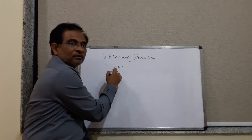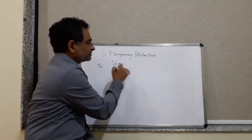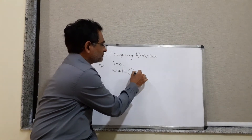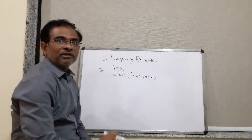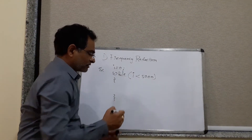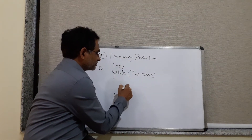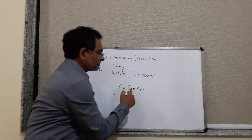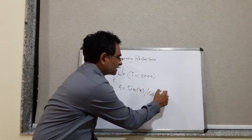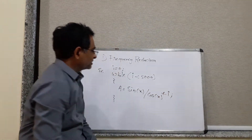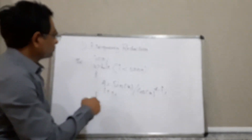Let's take an example: i is equal to 0, and within a while loop, we have a condition i is less than 5000. Inside this loop, there is a statement which is something like sin(x) into cos(x), or maybe sin(x) divided by cos(x), and then multiplied by i — something like that. So this expression is present inside the loop, along with i++.